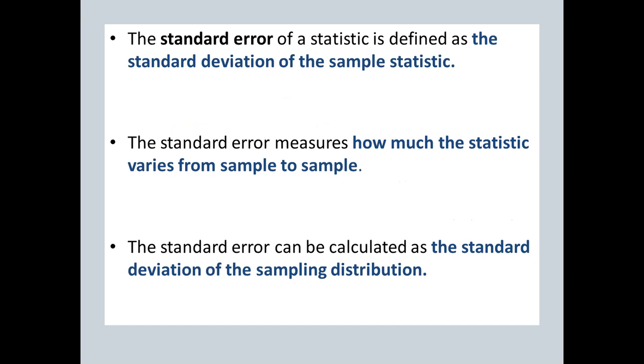And then there it is here for the samples of size 100. The standard error is 0.048. And what the standard error is supposed to do is quantify the sampling variability. The standard error, by definition, is the standard deviation of the sample statistic. It does measure how much the statistic varies from one sample to another, and the way that you can compute it is as the standard deviation of the sampling distribution. So that's what StatKey is doing to get those numbers, to get the 0.171 and the 0.048.